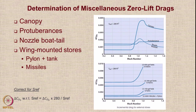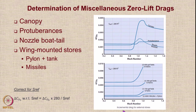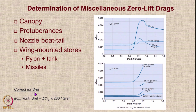Now we come to delta CDO, which is due to various miscellaneous components like canopy, protuberances, nozzle boat tail, wing-mounted stores, pile-on tank, etc. There are recommendations given for what the drag area will be for various types. The incremental drag for external stores and the incremental drag for canopy, protuberances, and nozzle boat tails are covered by separate graphs. When you have stores, use the stores graph; when you have canopy, protuberances, and nozzle boat tail, use the other graph. Remember to correct for Sref.